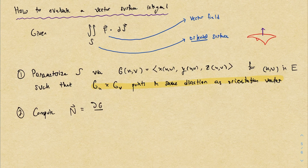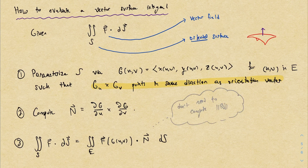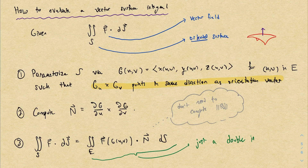We compute the normal vector just like we did before, and then convert the surface integral into a double integral. The way we do that this time is by taking the dot product of the vector field with the normal vector. In the scalar case, you multiply by the magnitude of the normal vector, but in the vector case you don't need to do that. This is completely analogous to the line integral case — it looks a little funny but it really is just a double integral, and from there you apply whatever double integral techniques are needed.